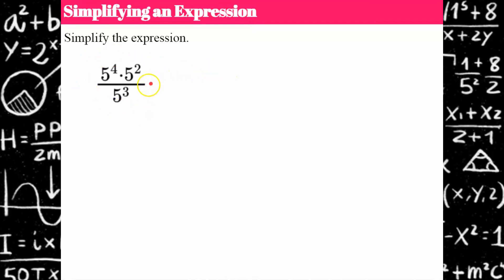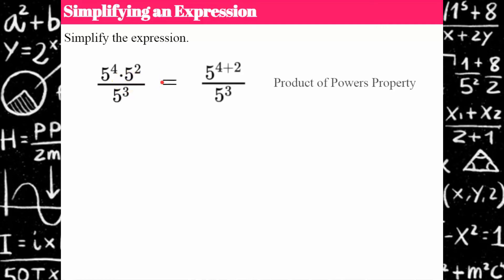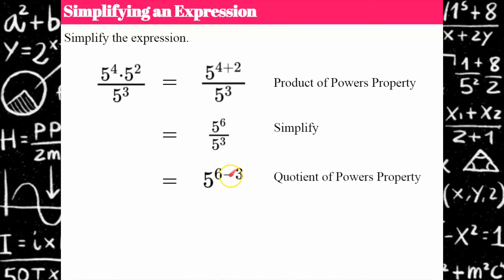To simplify this expression, the first thing I notice is that I have three powers — two in the numerator and one in the denominator. I would employ the product of powers property in the numerator: five to the fourth multiplied by five squared. In my previous video I show that we add exponents when we multiply. So simplifying that gives me five to the sixth over five cubed. Now using the quotient of powers property, I subtract my exponents: six subtract three is three. So I get five cubed, which is 125.